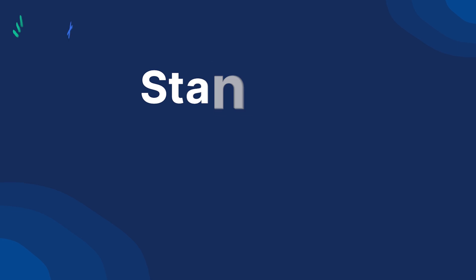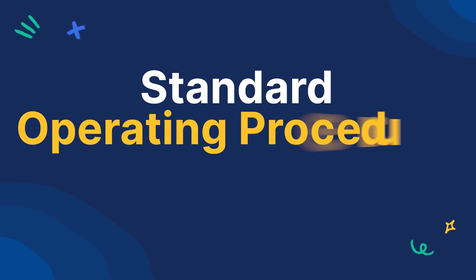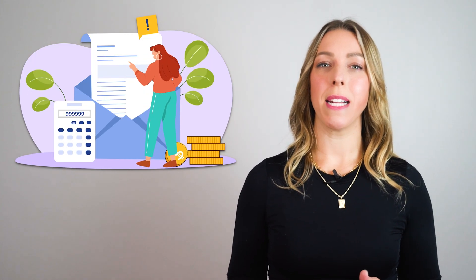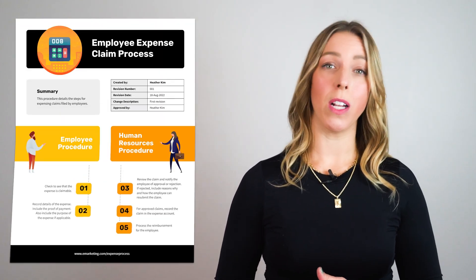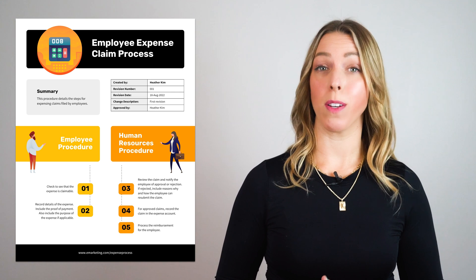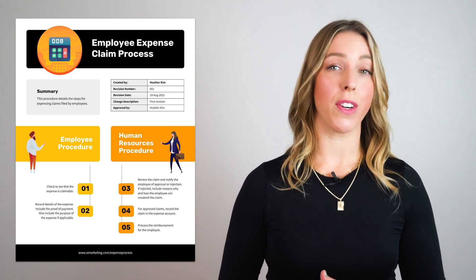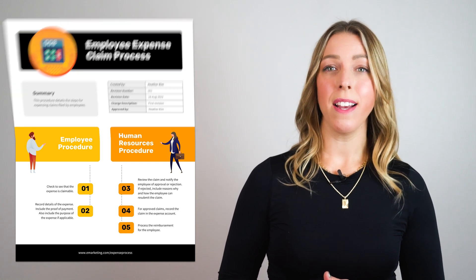The use of Standard Operating Procedures is crucial in many departments. Let's have a better understanding with the help of some scenario-based examples. An employee submitted an expense claim for reimbursement. Following this expense claim process SOP, the HR team systematically reviewed and verified receipts, ensuring compliance with company policies. Therefore, the SOP streamlined the reimbursement process, minimizing errors and ensuring accurate and timely payments to employees.